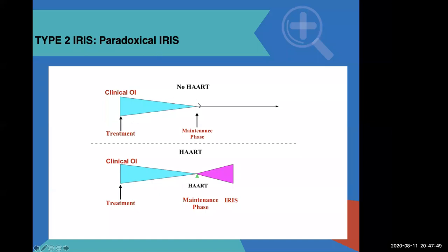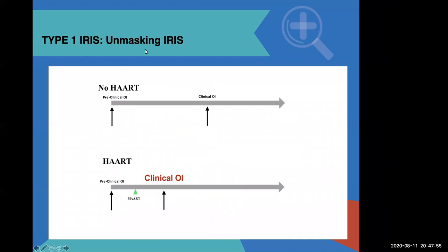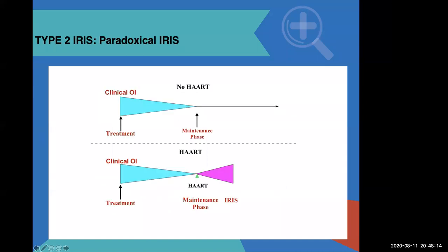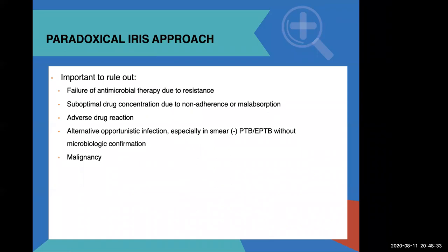To revise: unmasking IRIS happens when a patient has a preclinical opportunistic infection that presents after starting ARVs. Paradoxical IRIS happens when a patient has a known diagnosis like crypto — they were admitted, treated, symptoms disappeared — and then you started ARVs and the symptoms are back. With paradoxical IRIS, you always have to exclude other things: is she still taking treatment, is she adherent, is this not a drug adverse event, are there drug-drug interactions? Once you exclude all these, then you say it's paradoxical IRIS.